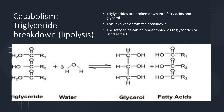Now we're going to talk about the breakdown of fat — in this case, the breakdown of triglycerides, or lipolysis. Triglycerides are broken down into fatty acids and glycerol through enzymatic breakdown. One molecule of triglyceride is broken down into one molecule of glycerol and three molecules of fatty acids. These fatty acids can be used as fuel or reassembled as triglycerides. Between fat, protein, and carbohydrates, fat stores the most energy per gram — nine kilocalories per gram — whereas protein stores seven kilocalories and carbohydrates store four kilocalories per gram.